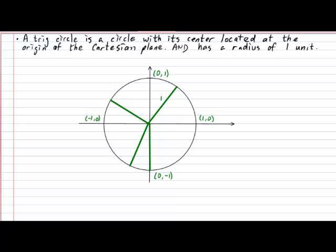But perhaps the single most important consequence of the trig circle always possessing a radius measuring one unit occurs when you inscribe a right triangle inside the circle using any of the radii as its hypotenuse. The fact that the circle has its center located at the origin of the Cartesian plane helps us derive the dimensions of this right triangle very easily.